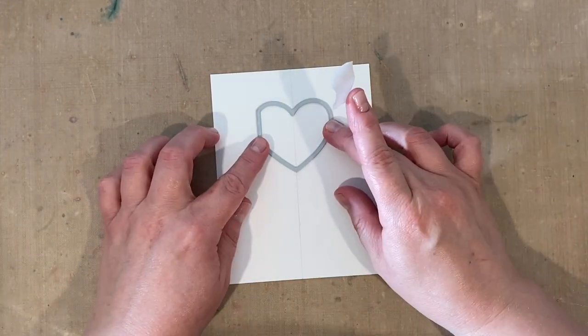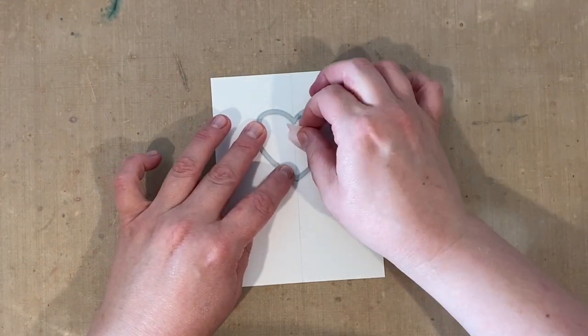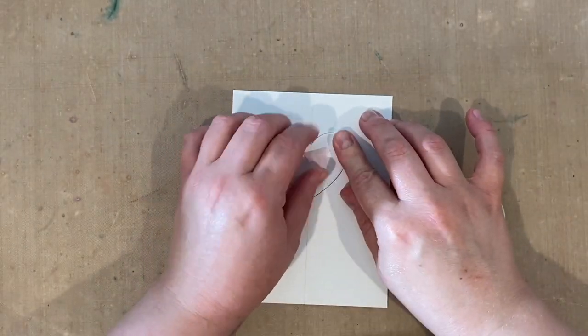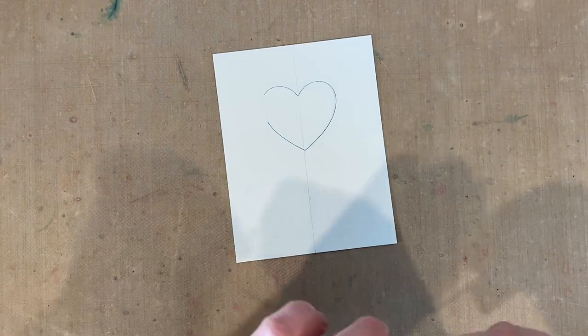I'm starting with a card panel that has a light pencil line drawn right down the middle to help me know where to position this hinged heart window. I'm just going to secure it with a little bit of low-tack tape and run it through my die-cut machine.